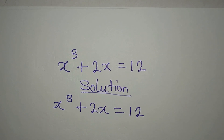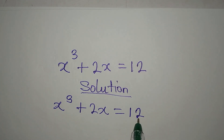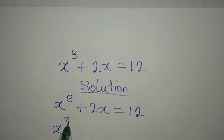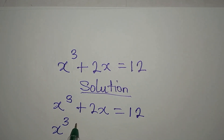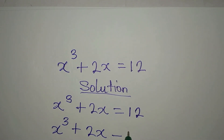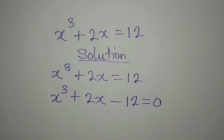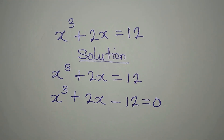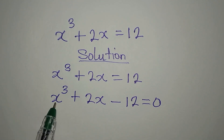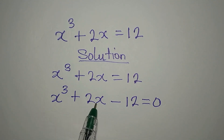The next step is to bring everything to the left, so we have x to the power of 3 plus 2x minus 12 equals 0. The next step is to factorize.